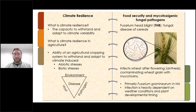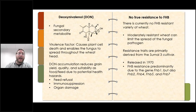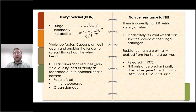Fusarium head blight infects wheat after flowering or anthesis and can contaminate wheat grain with mycotoxins. The primary mycotoxin we're concerned with is the fungal secondary metabolite deoxynivalenol (DON). It is a thermally stable virulence factor which causes plant cell death and enables the fungus to spread throughout the wheat head. As DON accumulates, it reduces grain yield, quality, and suitability as food or feed. It can cause feed refusal, immunosuppression, organ damage, and in pigs can cause loss of litters — overall reducing farmer profit if their wheat field is contaminated.